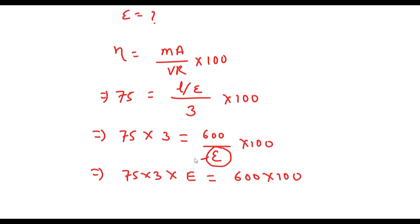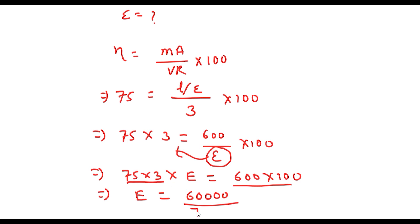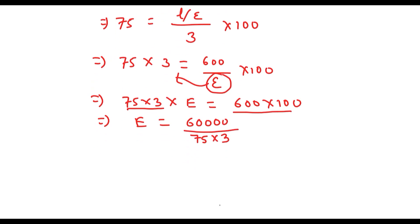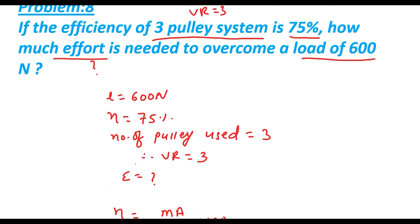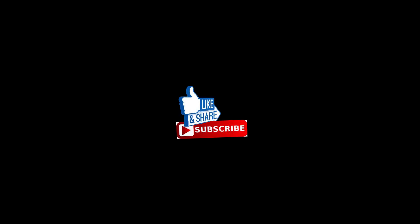Using cross multiplication: 75 into 3 into effort equals 600 into 100. Therefore effort equals 60,000 divided by 225, which gives approximately 266.67 Newton. This is the required effort. In this way we can solve any numerical problem related to the pulley system. Thank you.